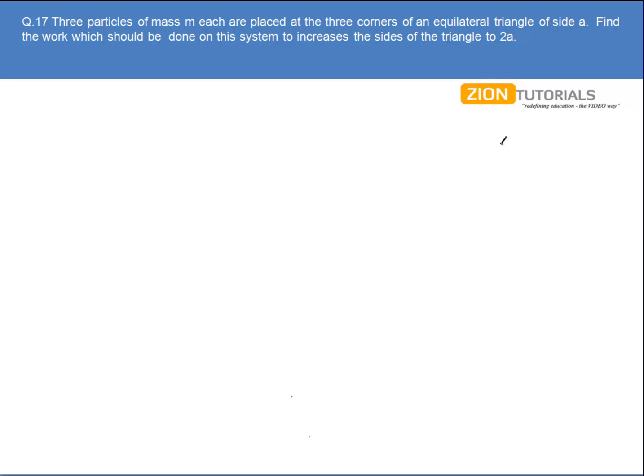The initial side of the triangle is A. It is expanded and made 2A. Now the best way to solve this problem is the energy approach, that is conservation of energy.